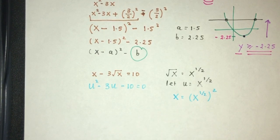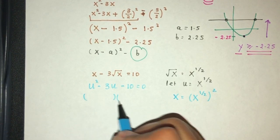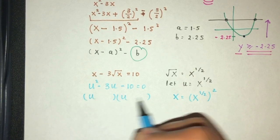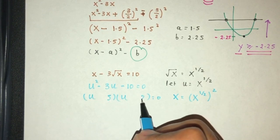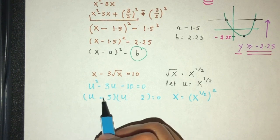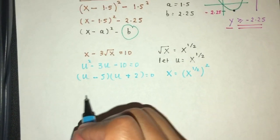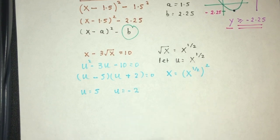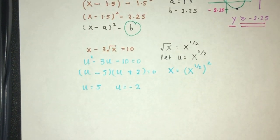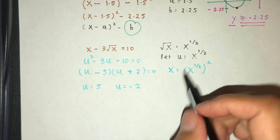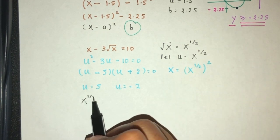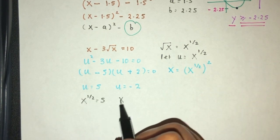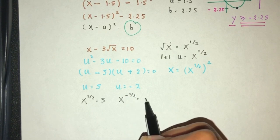Now you can see this is much easier to solve. So we can just factorize. u and u, that should be 5 times 2 for 10. Minus 3 should be minus 5 plus 2. Finally, u will be the value of 5 and u will be the value of minus 2. But now again, we're not trying to find the value of u. We're trying to find the value of x. That will be x. x half would be 5. x half would be minus 2.